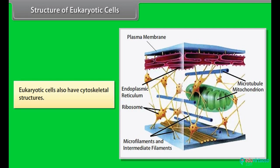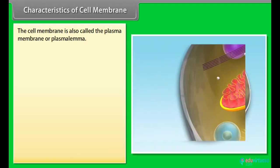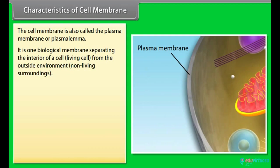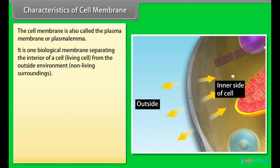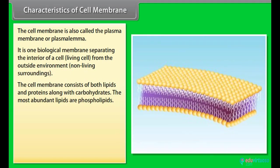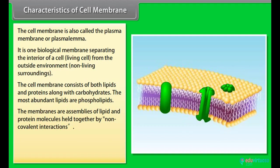Characteristics of cell membrane: The cell membrane is also called the plasma membrane or plasma lemma. It is one biological membrane separating the interior of a cell from the outside environment. This cell membrane consists of both lipids and proteins along with carbohydrates. The most abundant lipids are phospholipids. The membranes are assemblies of lipid and protein molecules held together by non-covalent interactions. The lipid molecules are arranged as a continuous bilayer, approximately 4 to 5 nm thick.